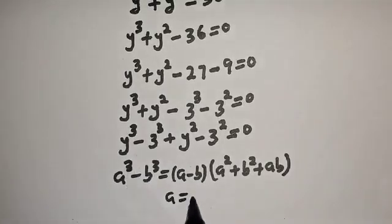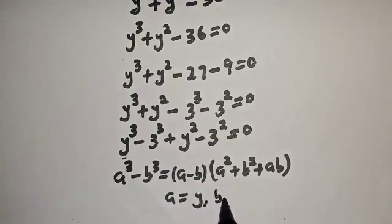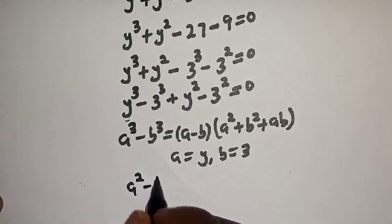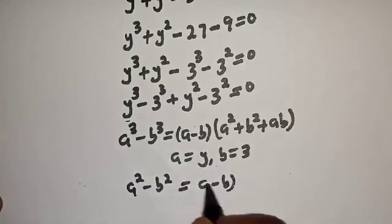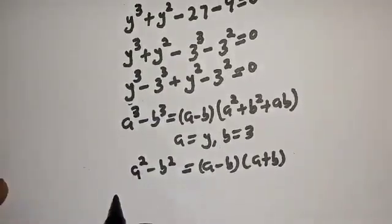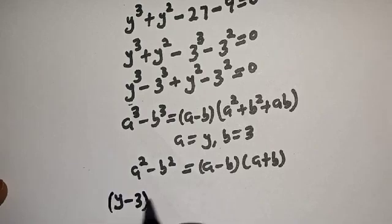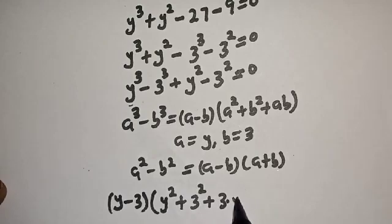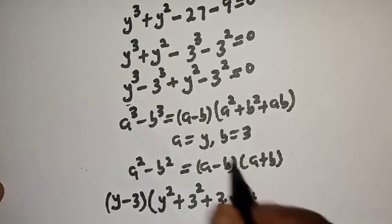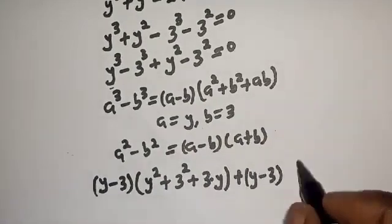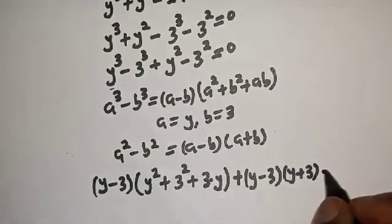Where A equals y and B equals 3. Also, if you have A squared minus B squared, this is equal to A minus B, bracket, A plus B. Substituting, we have y minus 3, bracket, y squared plus 3 squared plus 3 times y, plus y squared minus 3 squared, times y minus 3, bracket, y plus 3, is equal to 0.